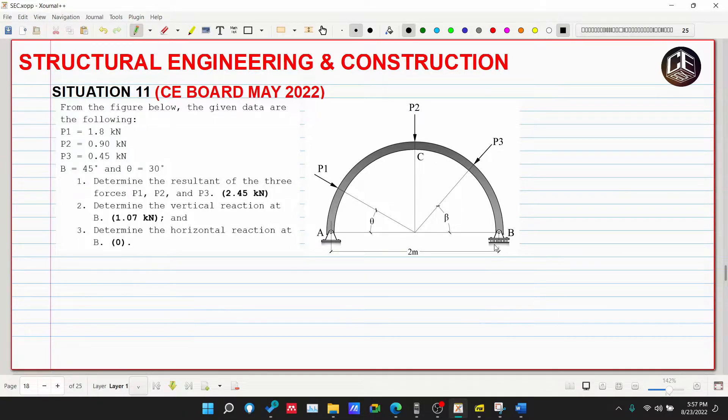Number one: determine the resultant of the three forces P1, P2, and P3. San nga ba natin unang natutunan ang resultant? Unang natutunan ng resultant sa statics of rigid bodies under chapter two, resultant of force system. Kung resultant ang pinapakuha, R is equivalent to square root of summation of forces vertical squared plus summation of forces horizontal squared.